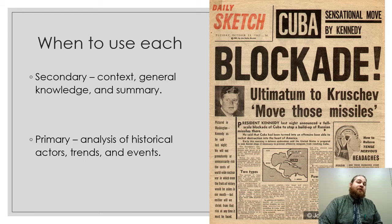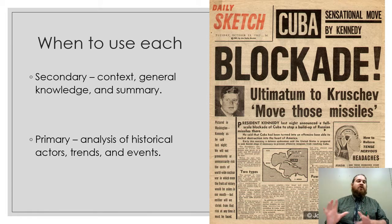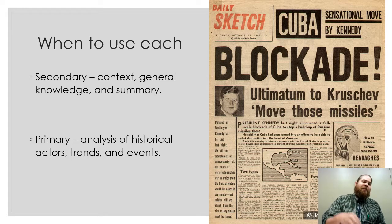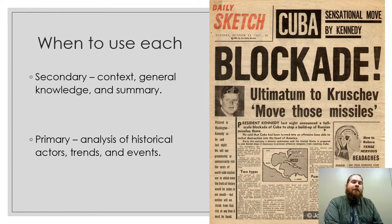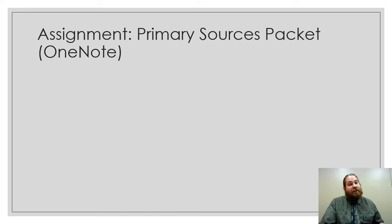When we're looking at sources, there are different scenarios in which to use each. Secondary sources give us context, general knowledge, and summary — this is your Wikipedia page, giving you a general sense of what happened. Primary sources help us dig down into the motivations, the choices, and the consequences of events in history. Now that we've talked about the difference between primary and secondary sources, go into your OneNote packets and complete the activities to practice and develop these skills. Have a great rest of your day.